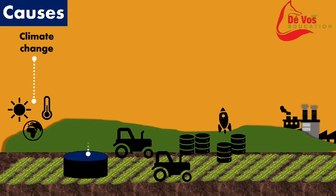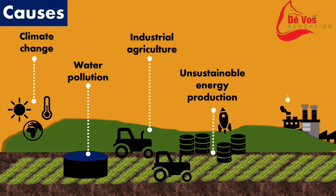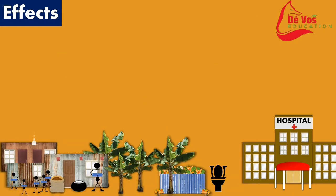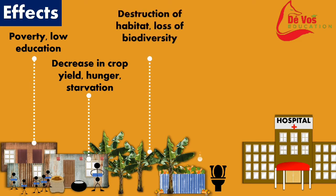At a global level, more than 50% of the world's cities and 75% of all the irrigated farms are experiencing water shortages on a recurring basis. Some causes of water scarcity include climate change, water pollution, industrial agriculture, unsustainable energy production and unsustainable industrial practices.